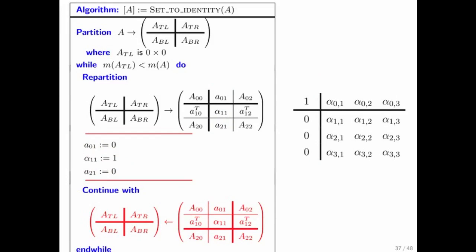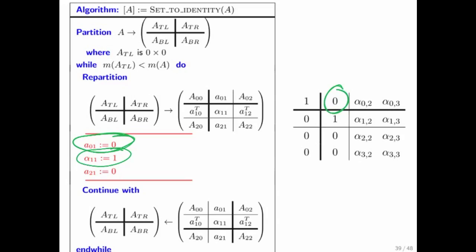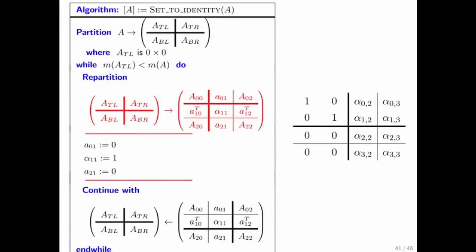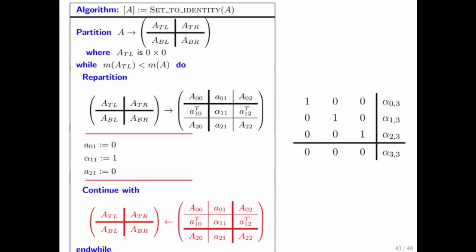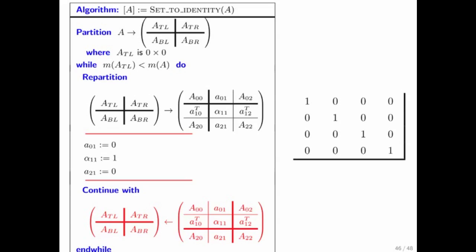Then you move on and expose again. This time A 2,1 is sitting in the next position, alpha 1,1 is here, and A 2,1 is here. We move on, expose, set, move on, expose, set, and we're done. This marches through the matrix somewhat differently. We're going to see that marching through the matrix this way is very useful for some of the algorithms and matrix operations that we encounter.